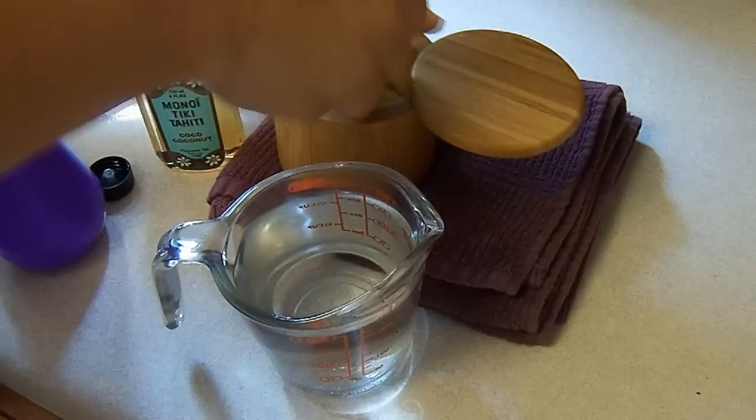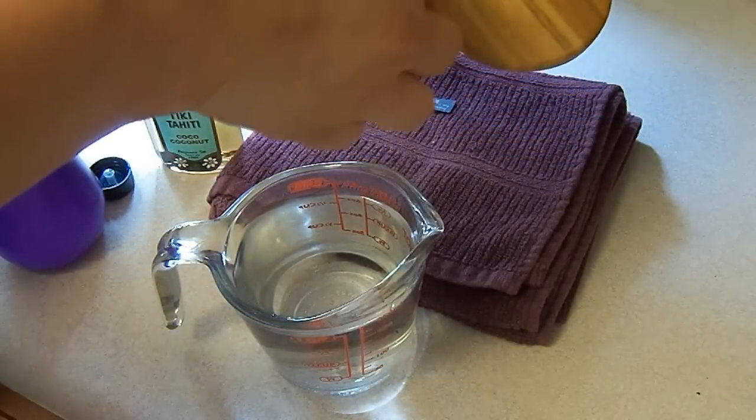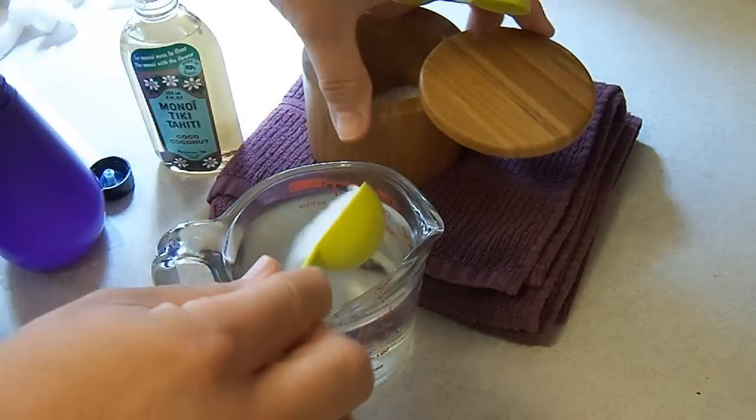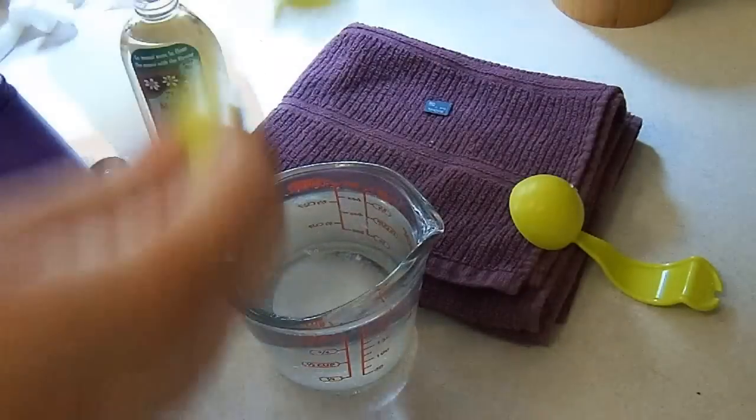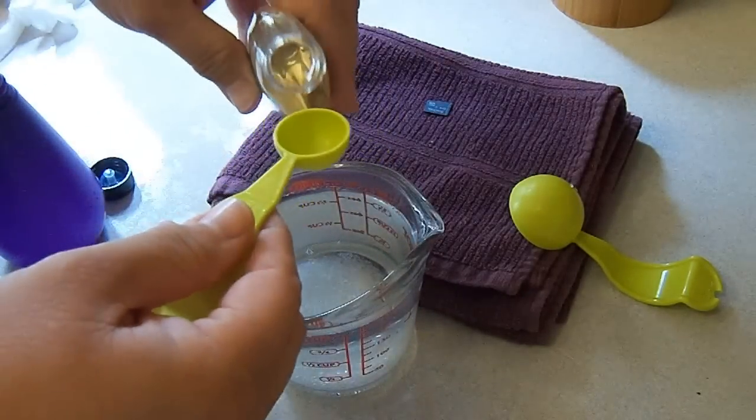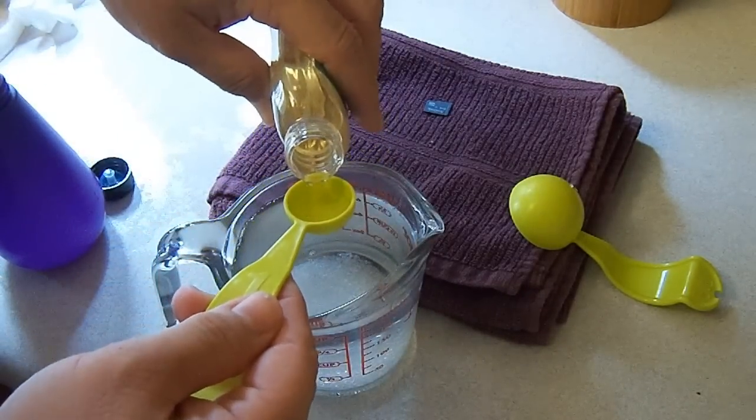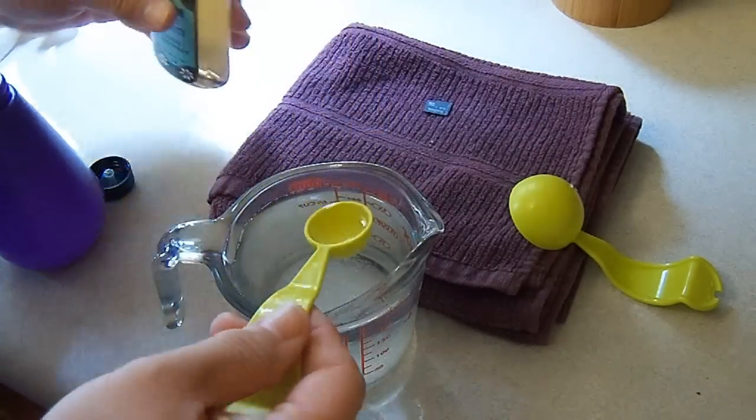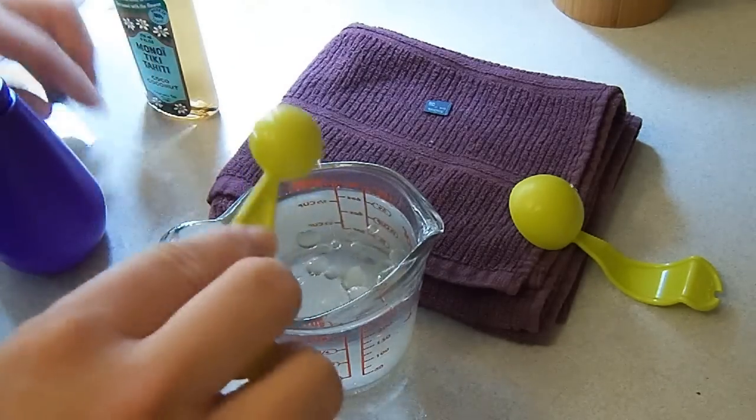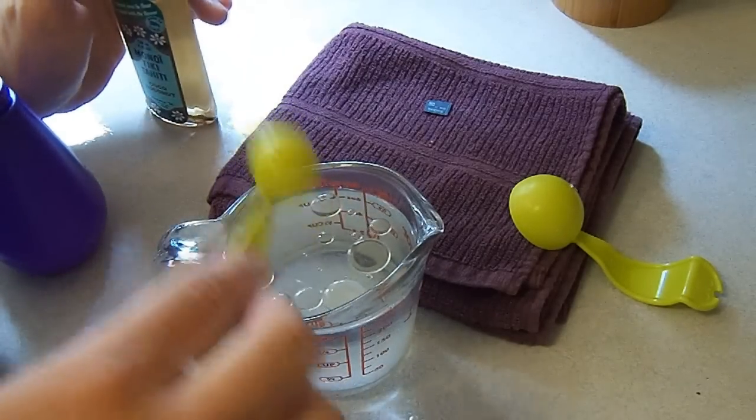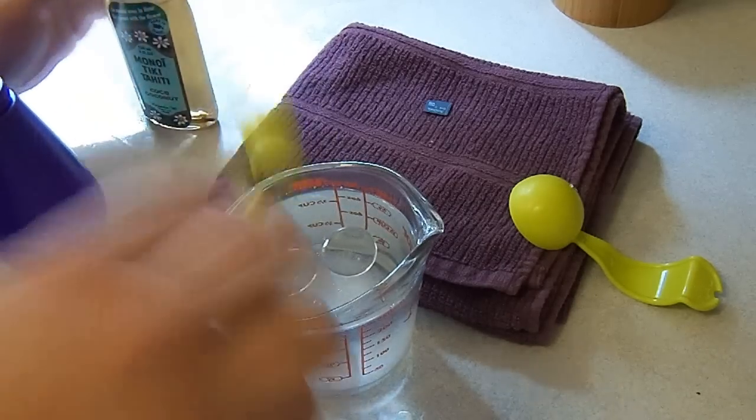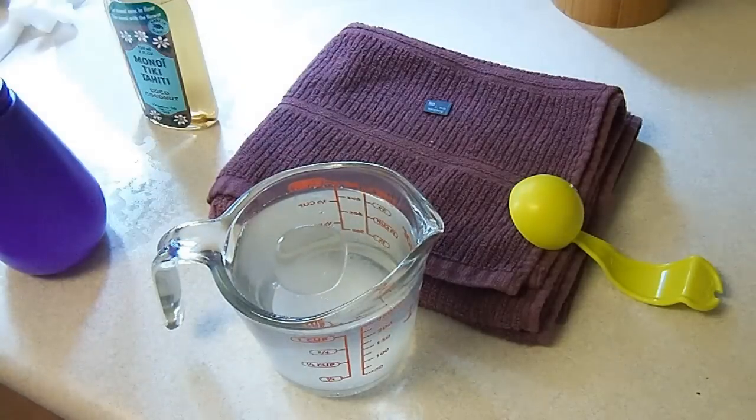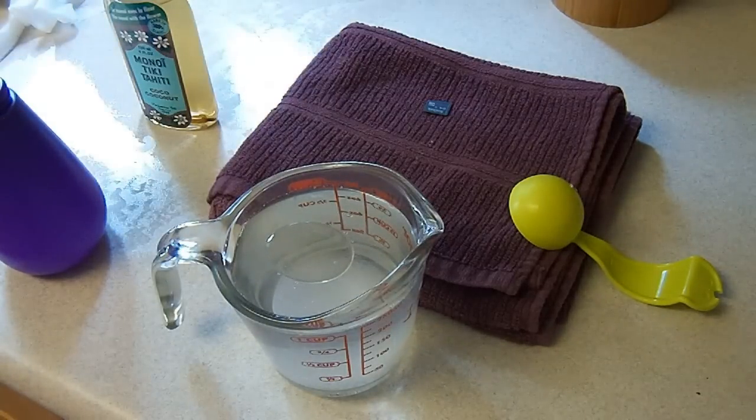One tablespoon of sea salt and one teaspoon of coconut oil. You can find coconut oil easily at say a Walgreens or you can find it on the shelf at a grocery store. Now I'm just going to mix this up.